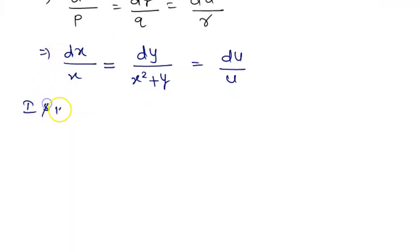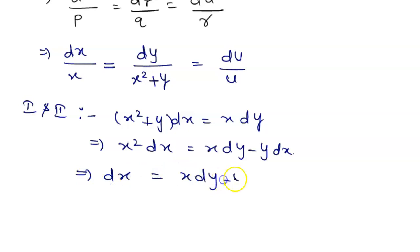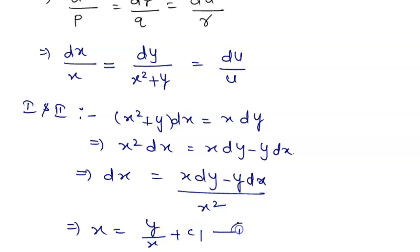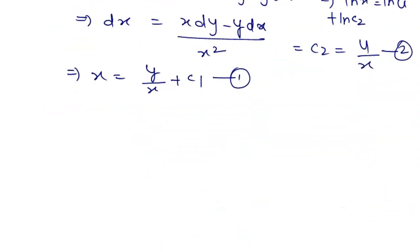Taking the first two terms: (x² + y)dx = x dy, giving x²dx = x dy − y dx. Dividing by x²: dx = (x dy − y dx)/x². Integrating both sides gives x = y/x + C₁, so C₁ = x − y/x. From the first and third parts: dx/x = du/u. Integrating both sides: log x = log u + log C₂, giving C₂ = u/x.